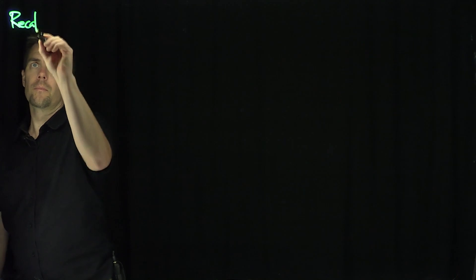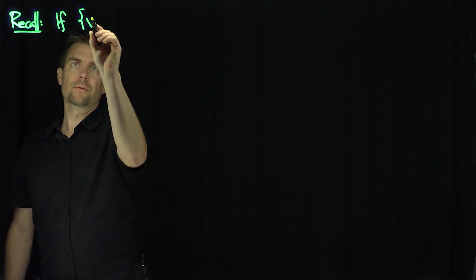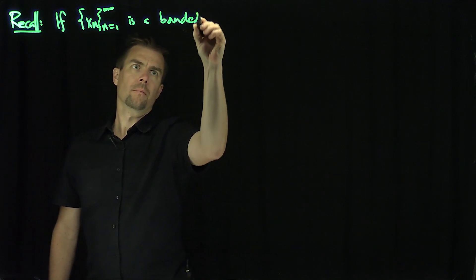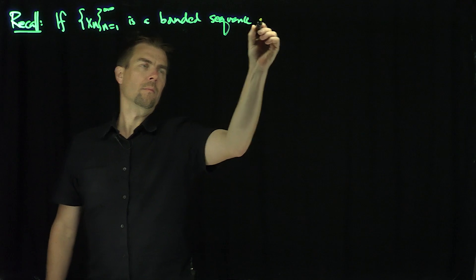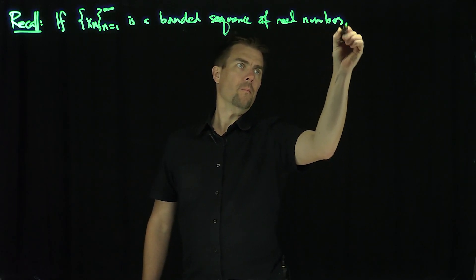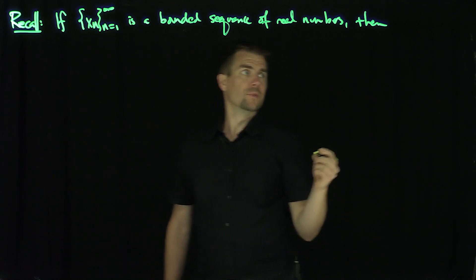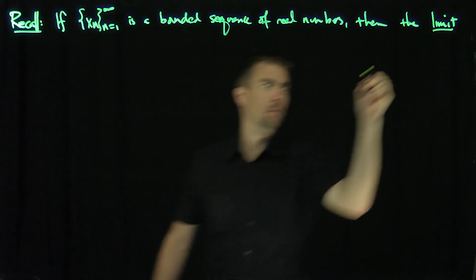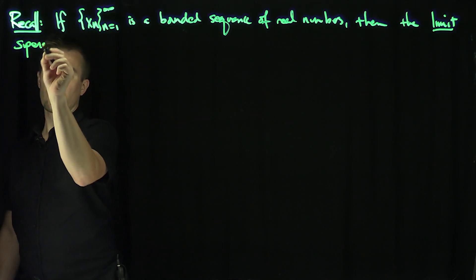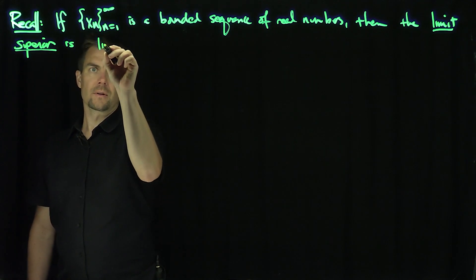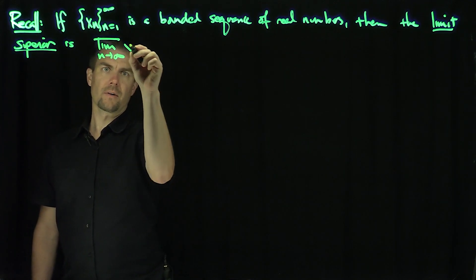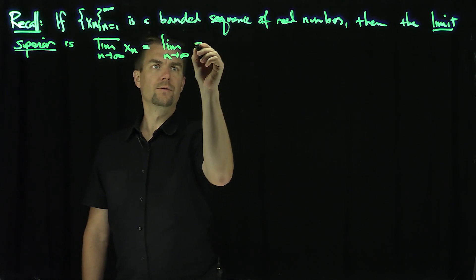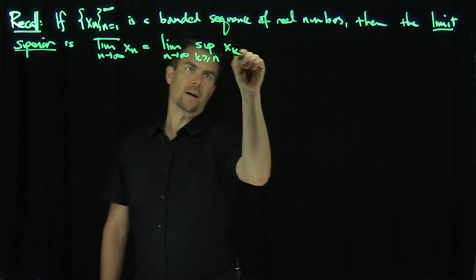Let's recall: if x_n is a bounded sequence of real numbers, then the lim sup — we say it's the lim sup as n goes to infinity of x_n — is the ordinary limit as n goes to infinity of the supremum over k greater than or equal to n of x sub k.